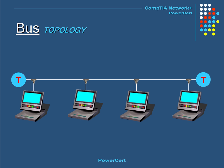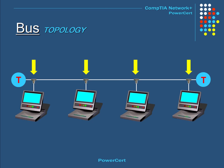This is called the bus topology. This topology is very old technology and is not used much today. This is the kind of network setup where each of the computers and network devices are connected to a single cable or backbone. This backbone is a coaxial cable, and the computers connect to it using special connectors called BNC, also known as T connectors.